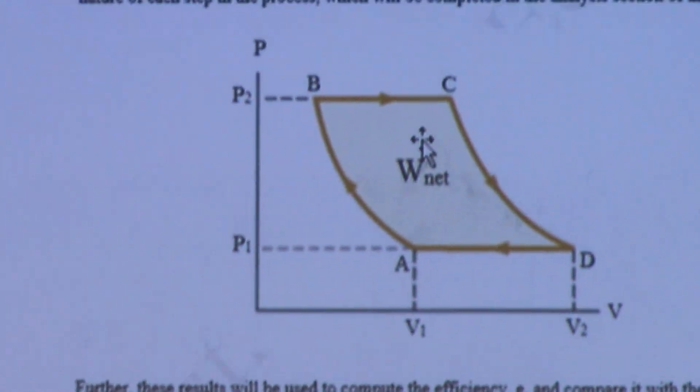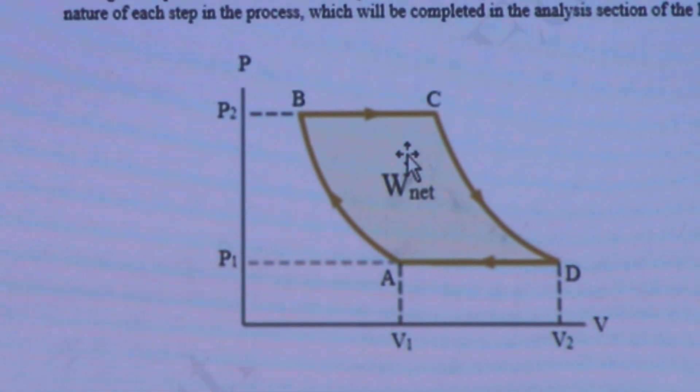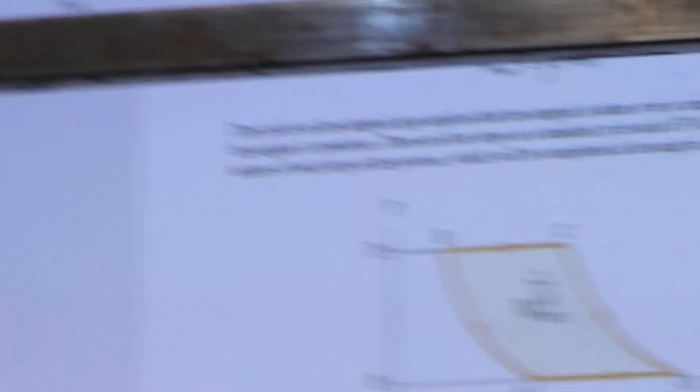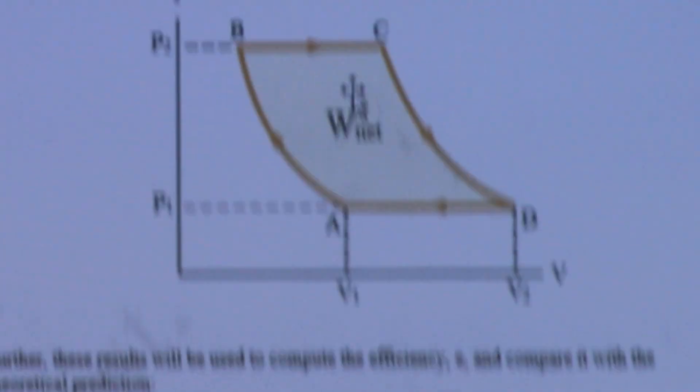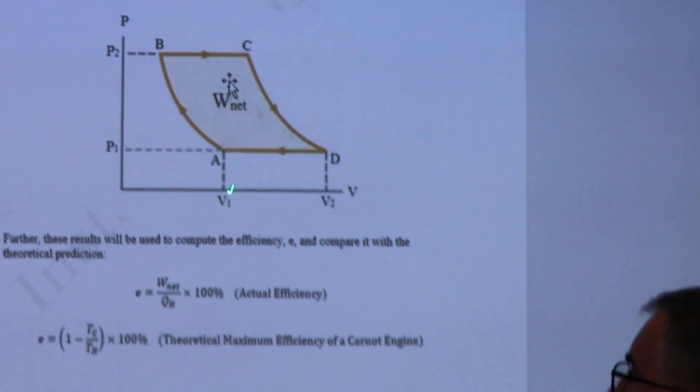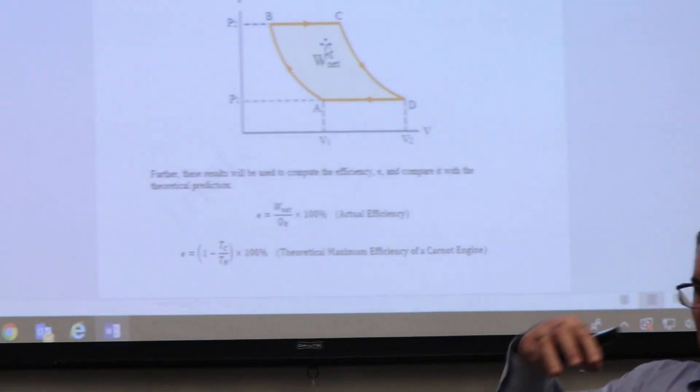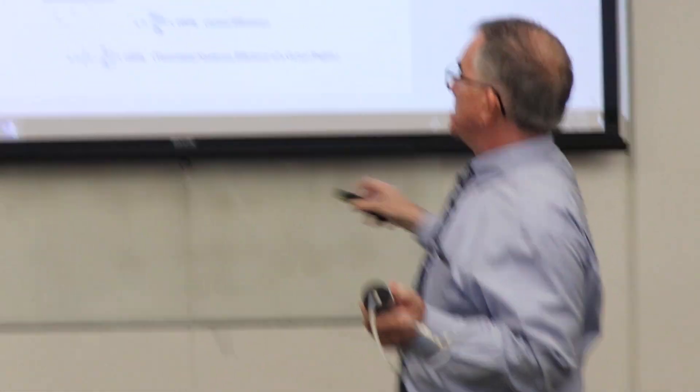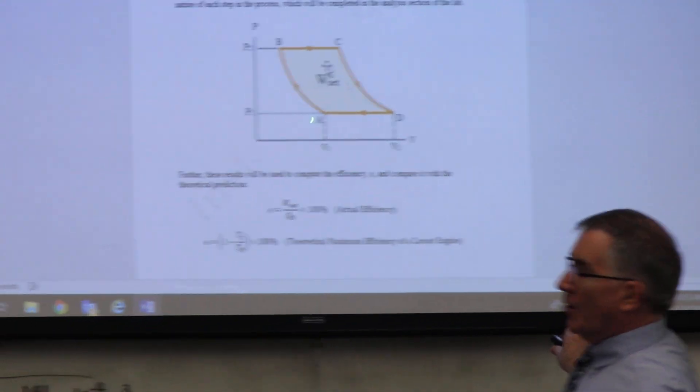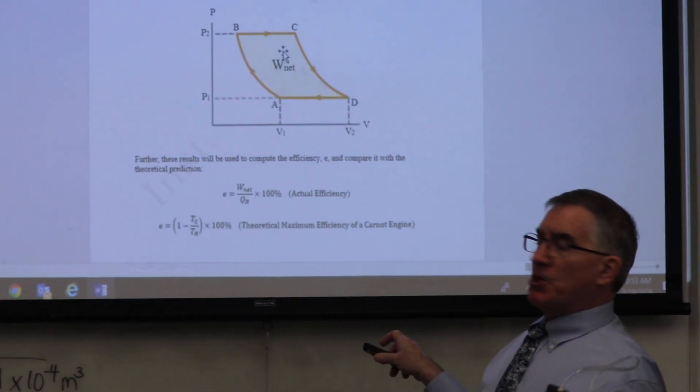But anyway, if you look up on the screen here, you can see right down here in the very lowest corner, this is where we start. The gas, that little can, is inside the ice bath. So the can is sitting in the ice bath, and it's at its lowest volume, the cylinder inside the heat engine that's going to lift the mass. It's at its lowest volume and lowest pressure, because everything is cold.